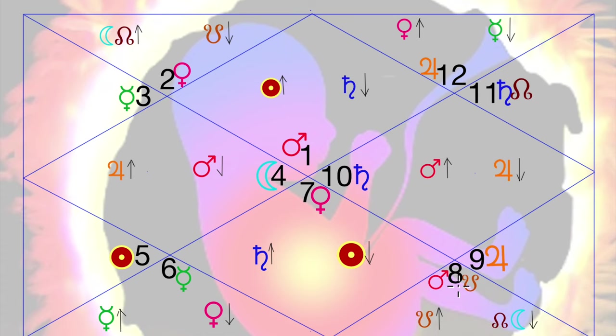Virgo. Seventh is Libra. Eighth is Scorpio. Ninth is Sagittarius. 10th is Capricorn. 11th is Aquarius. 12th is Pisces.